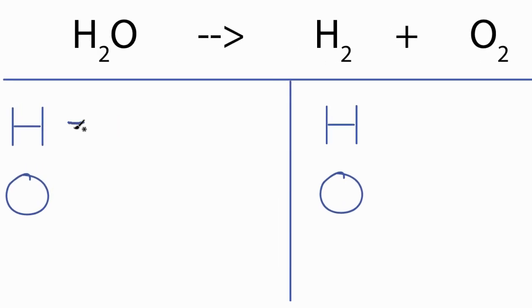So we can see that we have two hydrogens and we have one oxygen. On the product side, we have two hydrogens and we have two oxygens. So we need to fix the oxygens. Those are unbalanced.